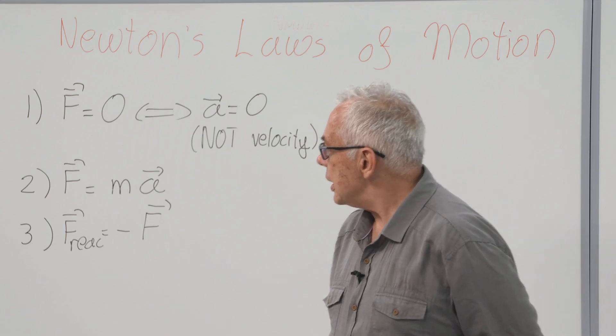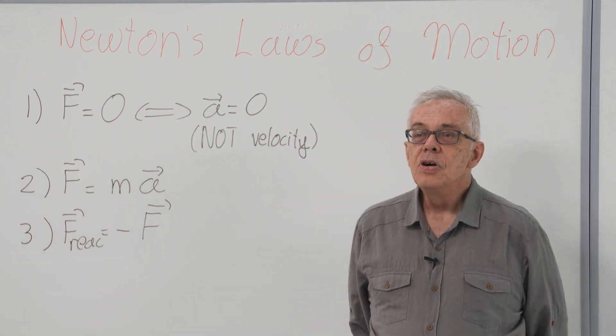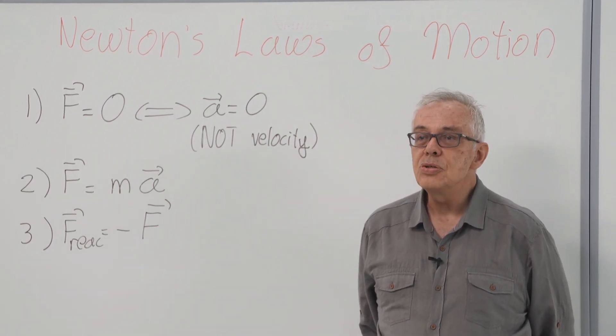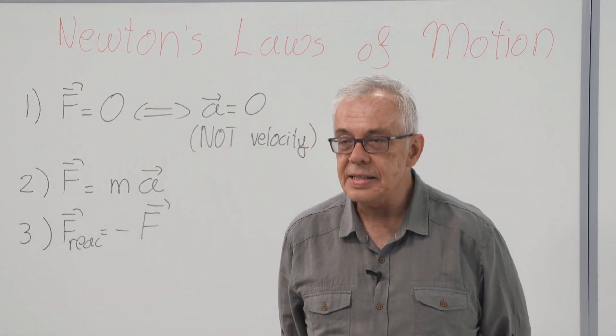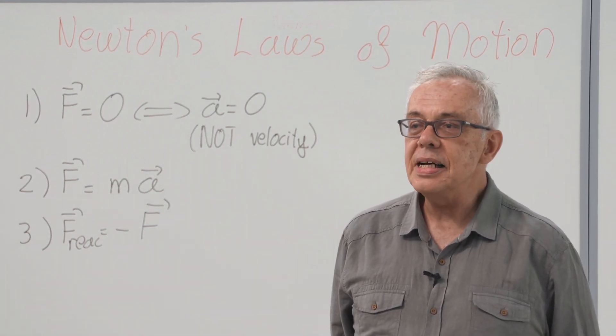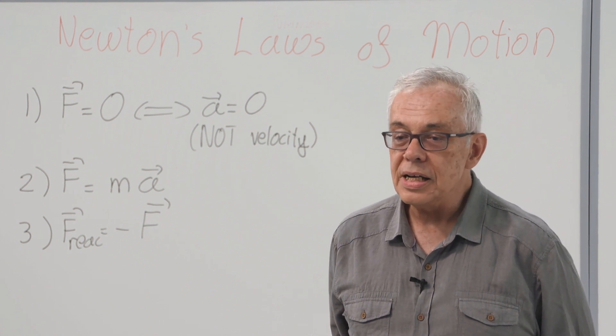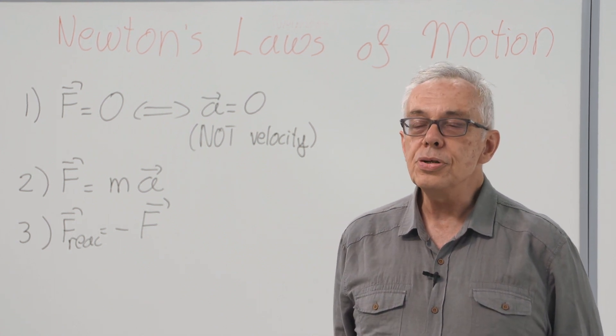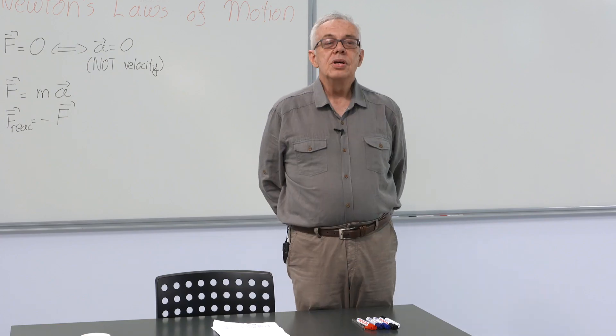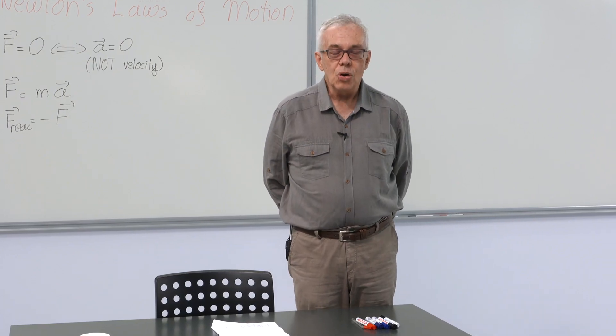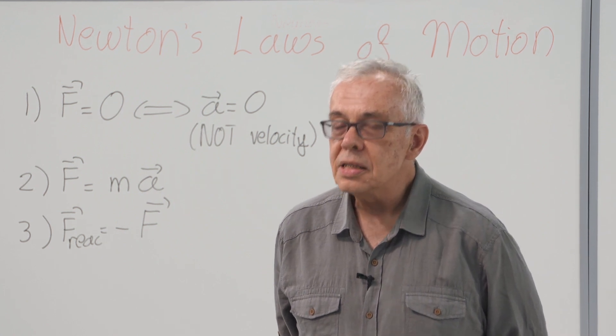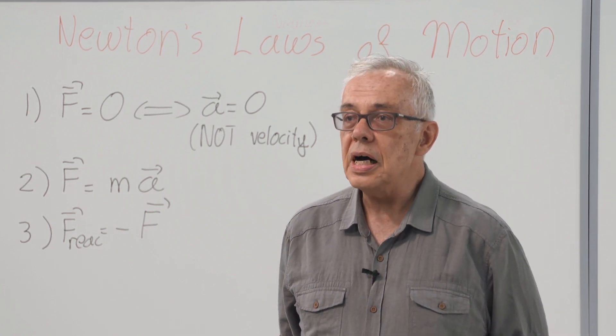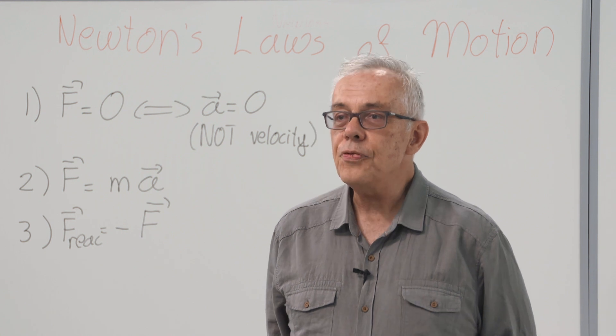Well, the horse is adding up forces acting on two different bodies. That is, itself and the cart, and getting a 0. This is a no-no. You should find the acceleration of the horse from the forces on the horse, and acceleration of the cart from the forces on the cart. Therefore,